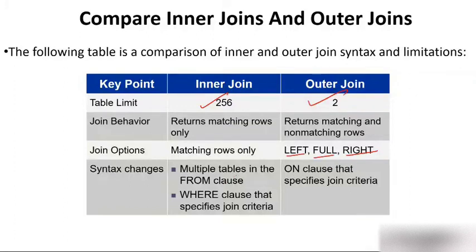In inner join, you use multiple tables in the FROM clause and a WHERE clause that specifies join criteria, like student.role equal to course.role. In outer join, you use an ON clause instead of WHERE to specify the join criteria. Always remember: in inner join you use WHERE, but in outer join you use ON.